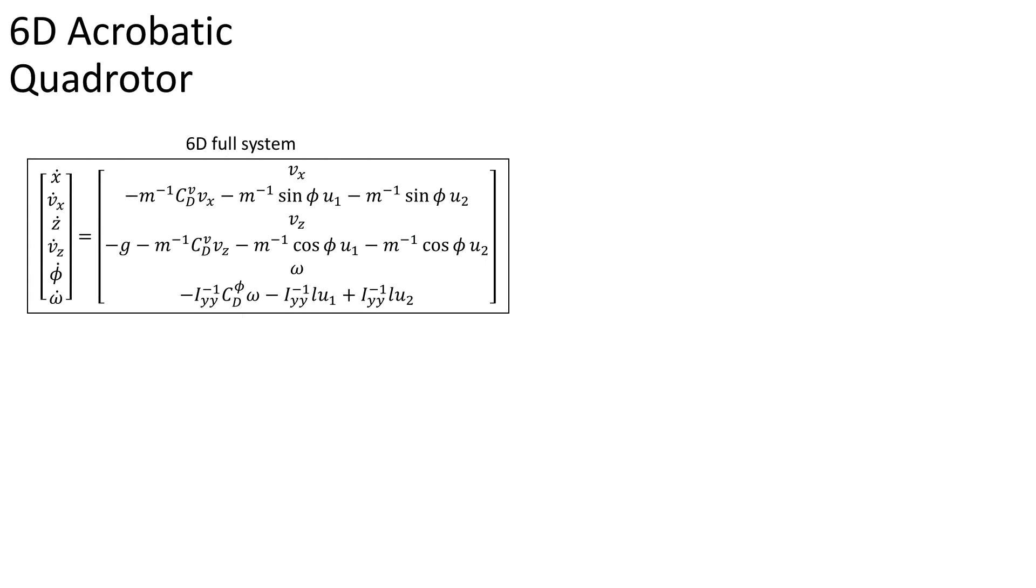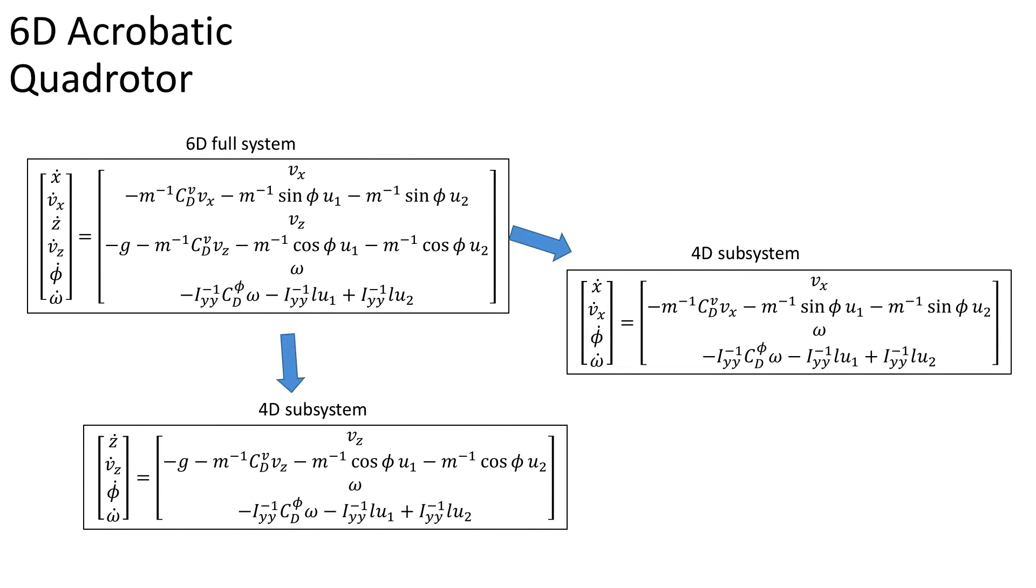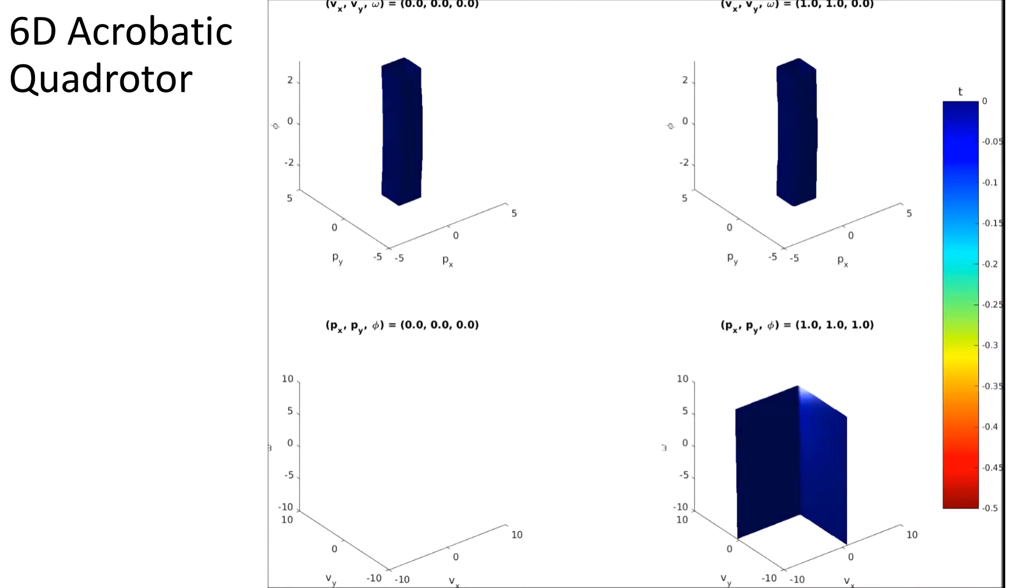This method also allows us to analyze systems that were previously completely intractable. Here is a 6D quadrotor model. Using our method, we can for the first time exactly compute the 6D reachable set. Shown here are 3D slices of the 6D set progressing over time.